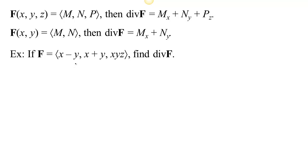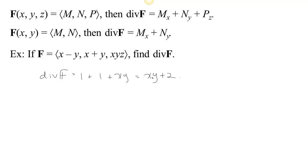Here's a quick example with a vector field from R³ to R³. We compute the divergence of f, which will be a scalar valued function. We take the partial of the first component with respect to x, which is 1, plus the partial of the second component with respect to y, which is also 1, plus the partial of the third component with respect to z, which is xy. So we get the scalar valued function xy + 2. This gives us information about the original vector field f. For now, we just want to be able to compute it — we're talking about the sum of the partials of the components with respect to their corresponding input variables.